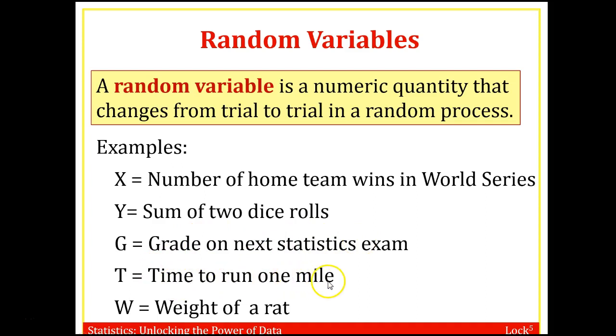It could be a grade on your next statistics exam. It could be time to run one mile. It could be the weight of a rat. So you had many different rats, you would have different weights. If you're taking the next test, you could get say between 0 and 100. And the sum of two dice rolls, you could get between 2 and 12. So just some examples, but there's many, many more we'll talk about throughout the semester.